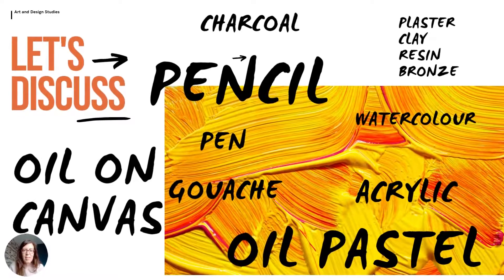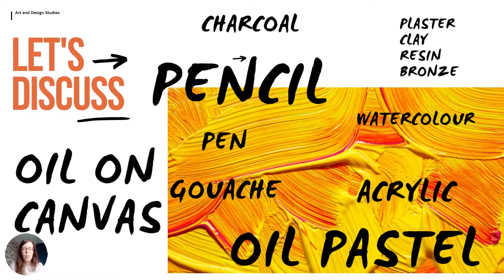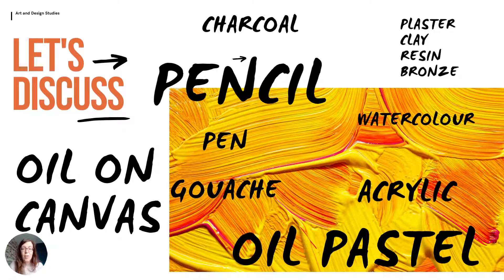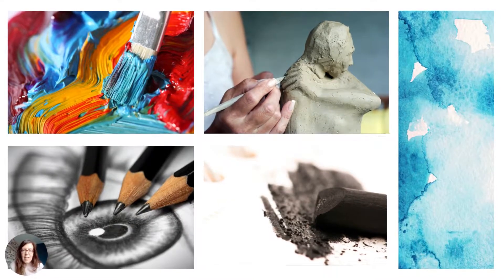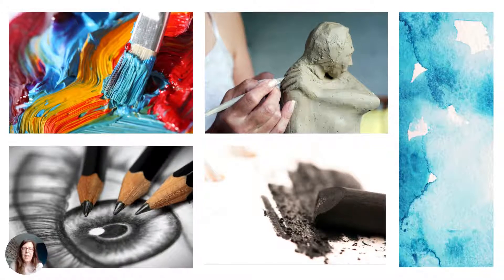On this slide you can see a variety of different materials which you will know about and probably have used in the practical part of the Art and Design course. You'll see some examples of dry media, wet media, and 3D media — these are the things which the artist uses to create the artwork. We can also see some examples of how the different media are used: paint may be applied using brush strokes, while a 3D piece of material may be used by carving, scoring, or modelling.